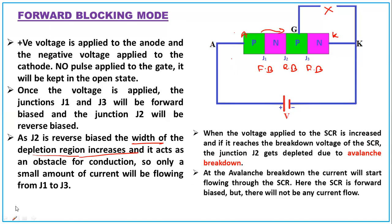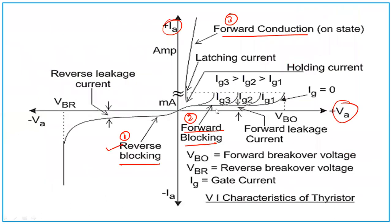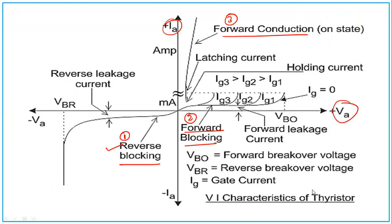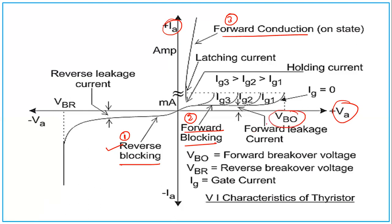When the voltage across the SCR is increased and reaches the breakdown voltage, junction J2 undergoes avalanche breakdown. At VBO, the current starts flowing through the SCR — this is the forward breakover voltage. Before that point, the SCR is forward biased but current flow is very, very minute. For current flow to happen there must be a gate pulse.